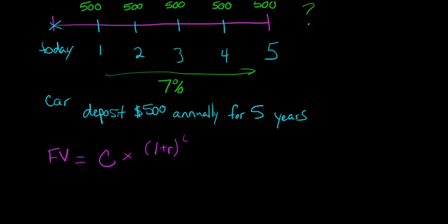1 plus R raised to the T power—T is the number of periods, in this case we've got 5 periods—and then we subtract 1. This is all the numerator in the fraction, and the denominator is going to be R again, that rate of interest.